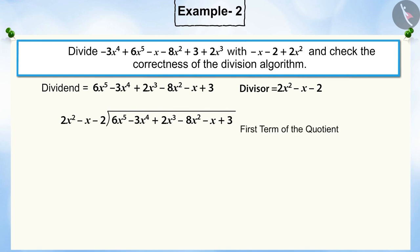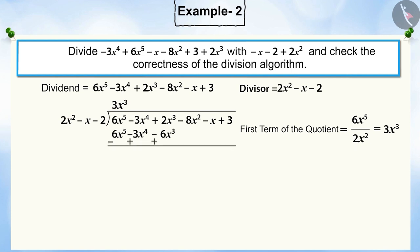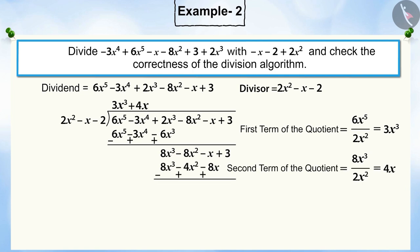To get the first term of the quotient, divide the highest degree term of the dividend by the highest degree term of the divisor. Now multiply the divisor by this quotient and write below the dividend. After subtracting, the remainder we get is 8x cubed minus 8x squared minus x plus 3. This becomes the new dividend. Repeat the division process with the new dividend, which is 8x cubed minus 8x squared minus x plus 3.